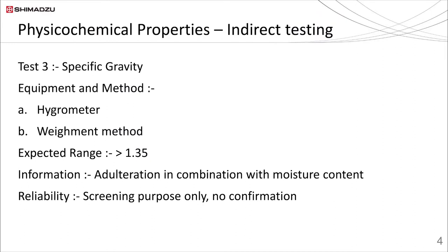Next is specific gravity, which is a measurement of the density of the sample. A lower specific gravity can be indicative of possible adulteration or dilution. The FSSAI limit specifies that specific gravity should not be less than 1.35. It can be performed by two different methods: using a simple hydrometer or by a gravimetric method. The gravimetric method is more accurate than the hydrometer, which also sometimes requires a larger quantity of sample.